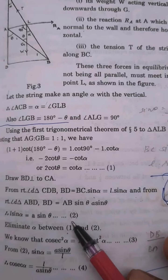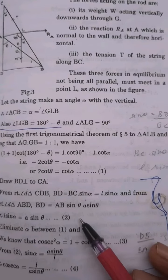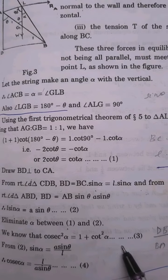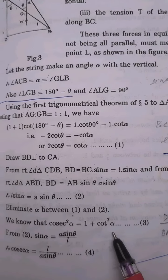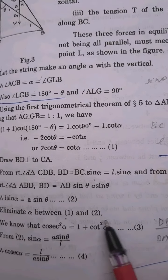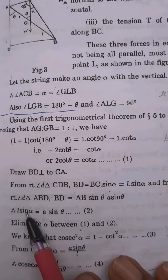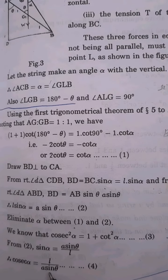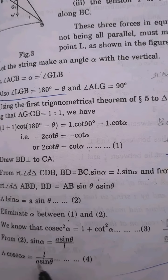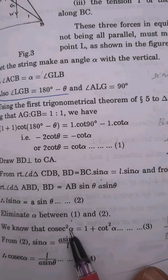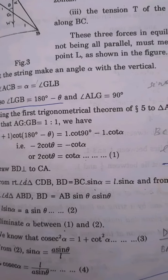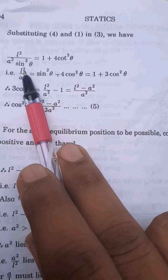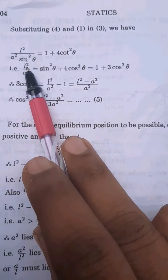So we now have two equations to work with. We eliminate alpha using the trigonometric identity: cosec² α = 1 + cot² α. Since sin α = (A/L) sin θ, the reciprocal gives cosec α = L/(A sin θ). So cosec² α = L²/(A² sin² θ) = 1 + 4 cot² θ. Therefore L²/A² = sin² θ + 4 cos² θ.